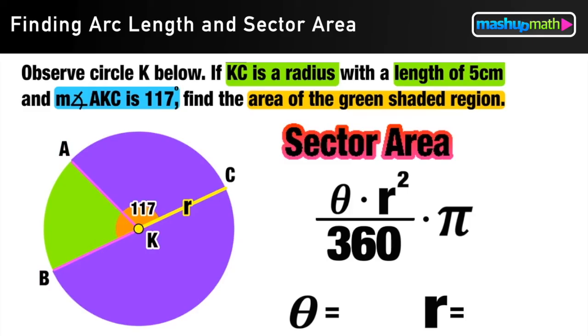So to find this angle, we do 180 minus 117, and we get 63 degrees for theta. And we were already told that line KC is a radius with a length of 5 centimeters. So our R value is going to be 5.